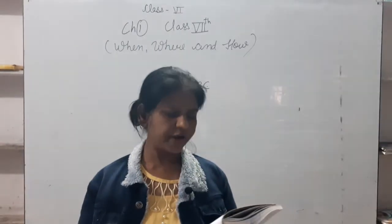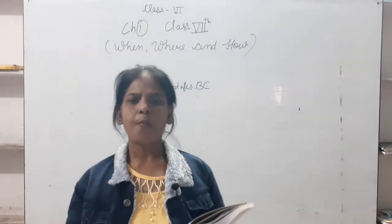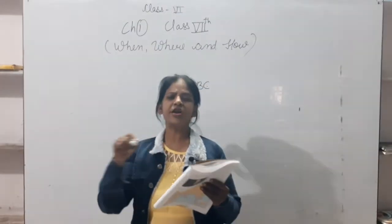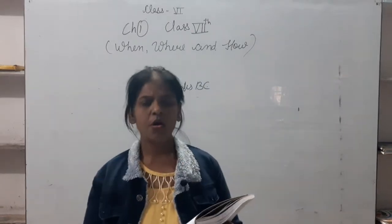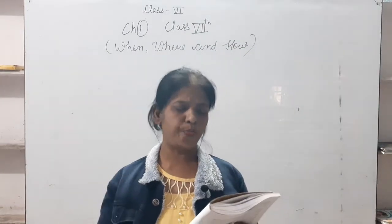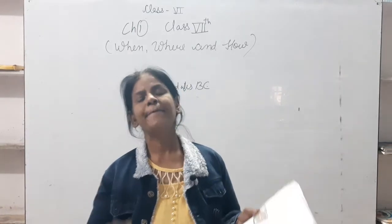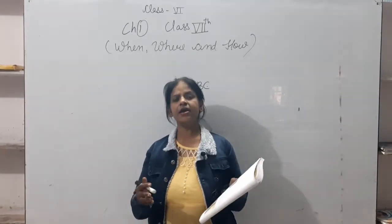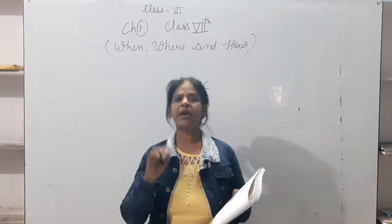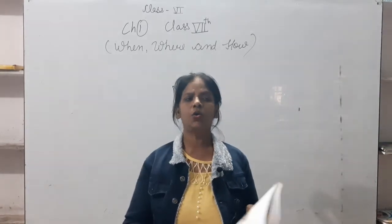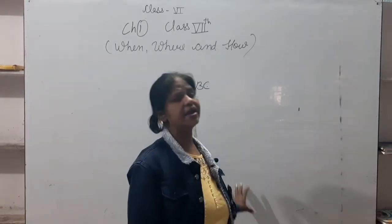Now we are concluding with inscriptions. There are many inscriptions written on plates of copper and stone. They provide valuable information of the medieval period. The most important example in India is Ashoka, which is written on pillars.